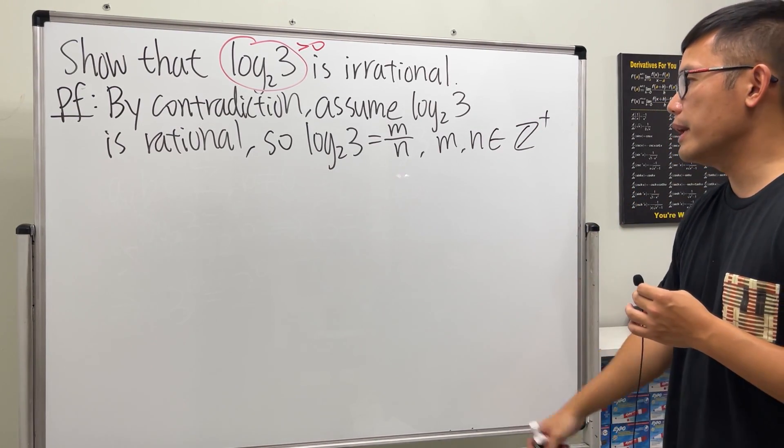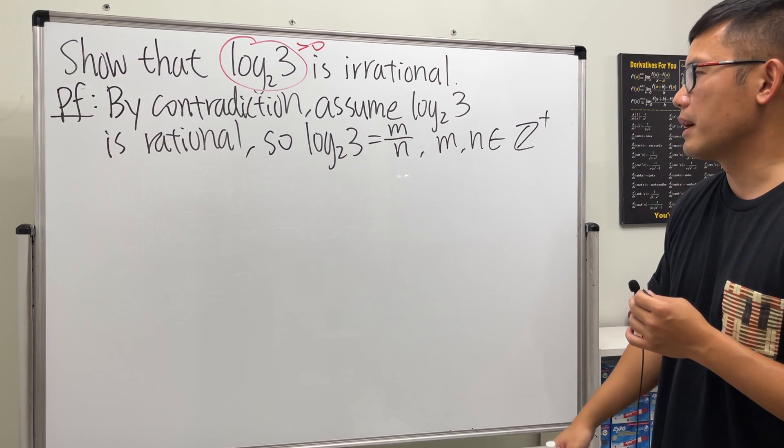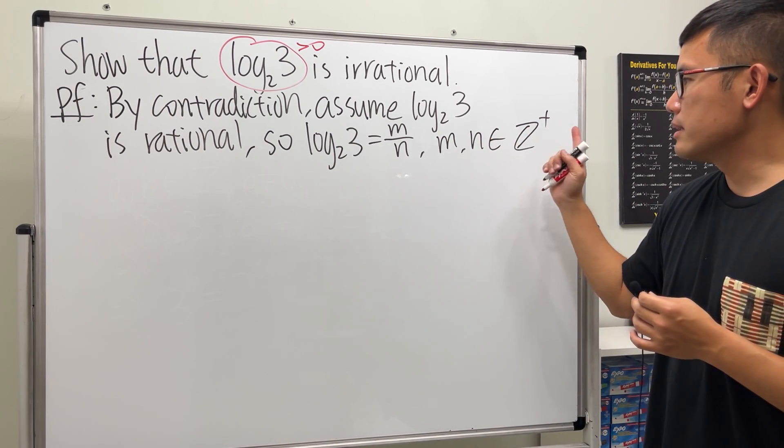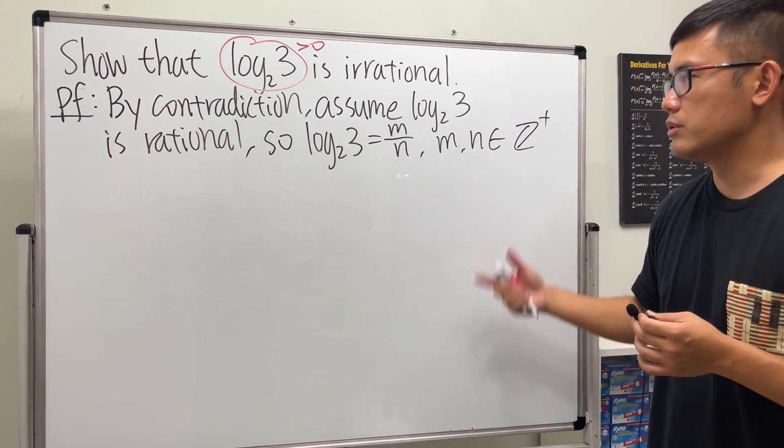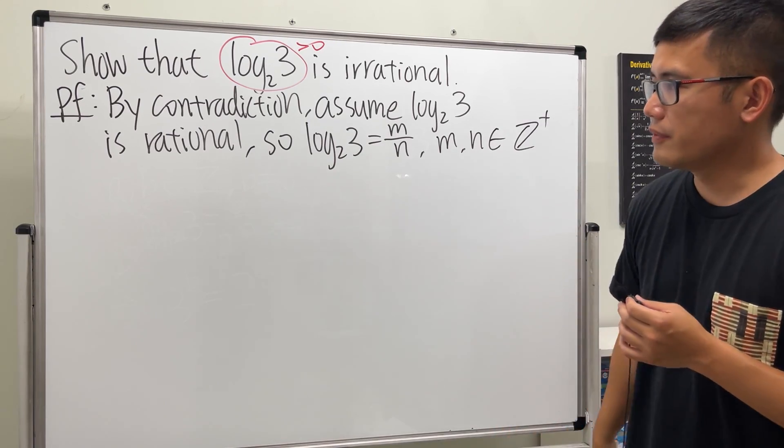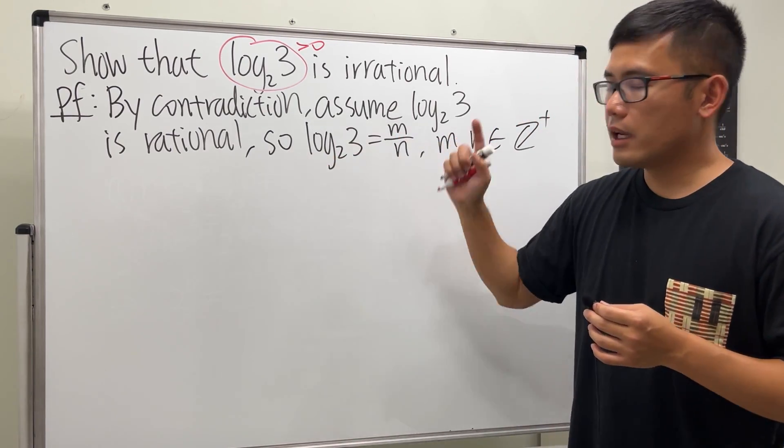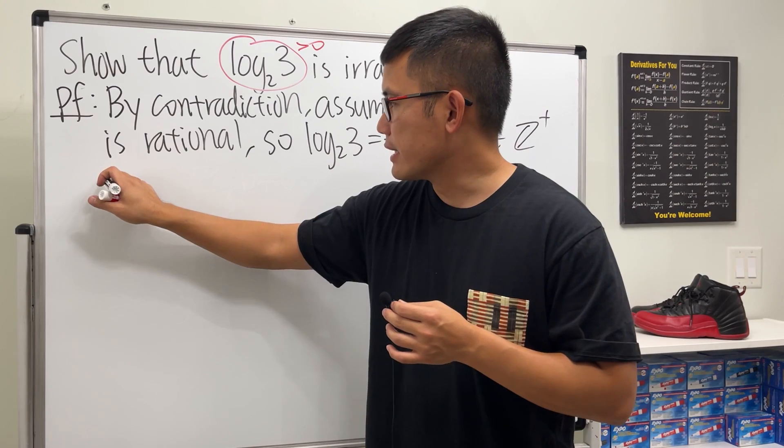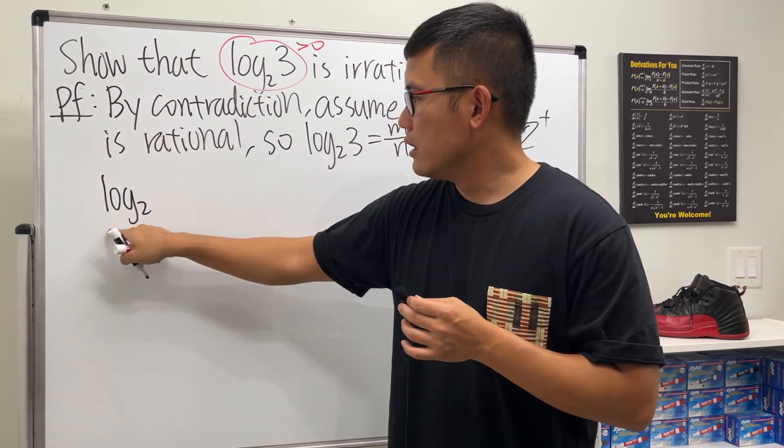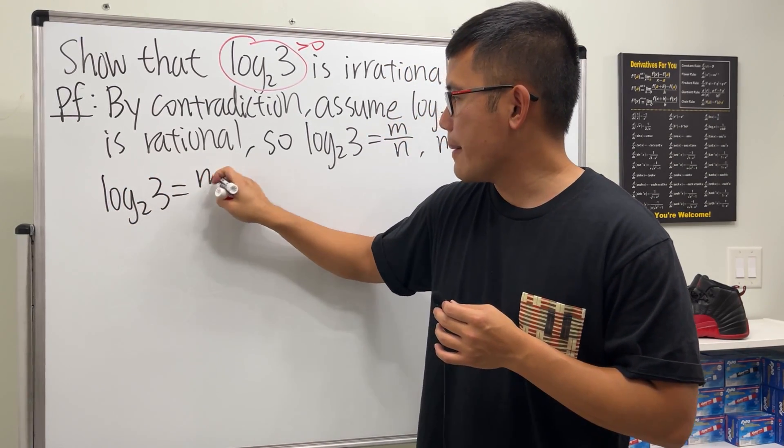All right, so keep all these small things in mind. And because I say n is a positive integer, I don't have to say n is not equal to 0, because this is given. All right, so from here let's see what we can do. This is the time that we can do some computations. Log base 2 of 3 is equal to m over n.